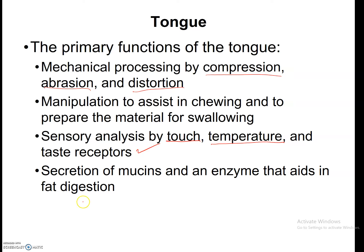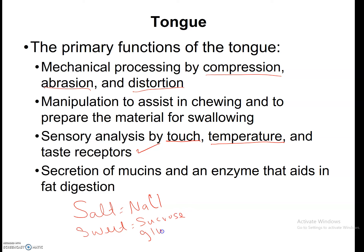The flavors we can taste are salty — basically a detection of sodium chloride — sweet, which is interesting because what you're really tasting is sucrose, not glucose, although you can taste glucose as well. Then sour, which would be acid like citric acid. And bitter, which is going to be things like tannins — things that could be potentially poisonous.